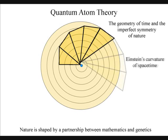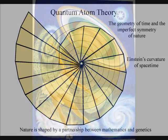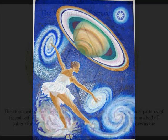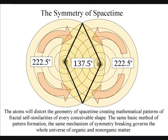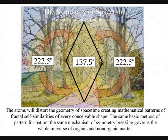The same mechanism of symmetry breaking governs the whole universe of organic and non-organic matter, from spiral galaxies to seashells, to the DNA of life itself. Everything will form into ever greater complexity, because everything is creating its own space-time geometry of ever greater diversity.